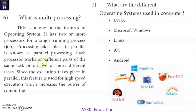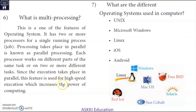Each processor works on different parts of the same task, so the execution takes place in parallel. This feature is used for high-speed execution, which increases the power of computing. In parallel processing, the computing speed and execution speed are much higher, so multiprocessing greatly increases computing power.